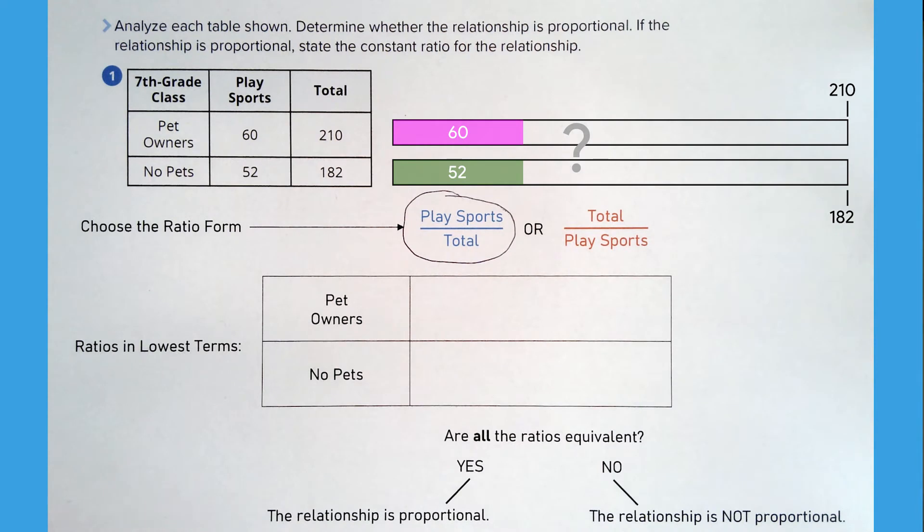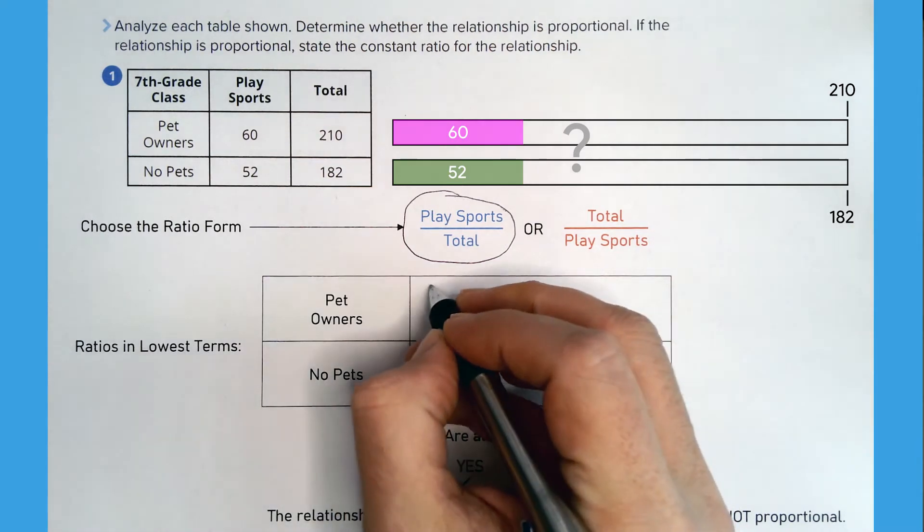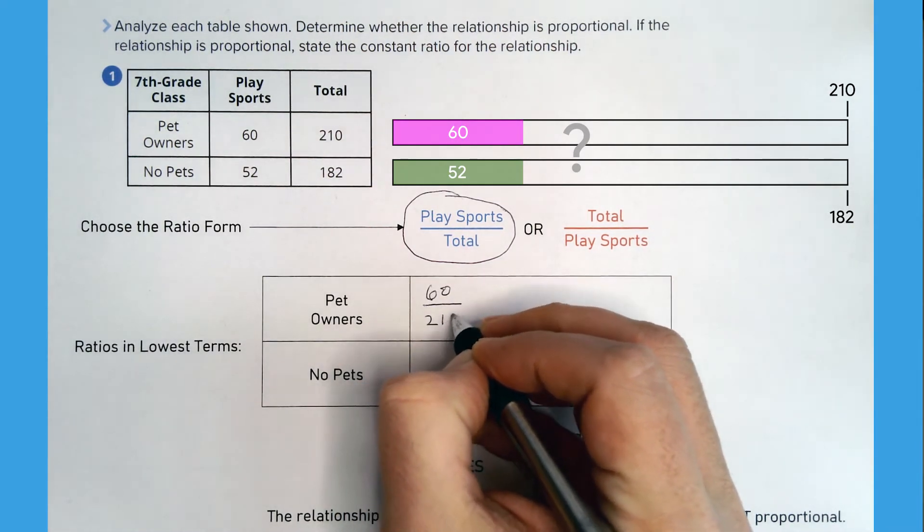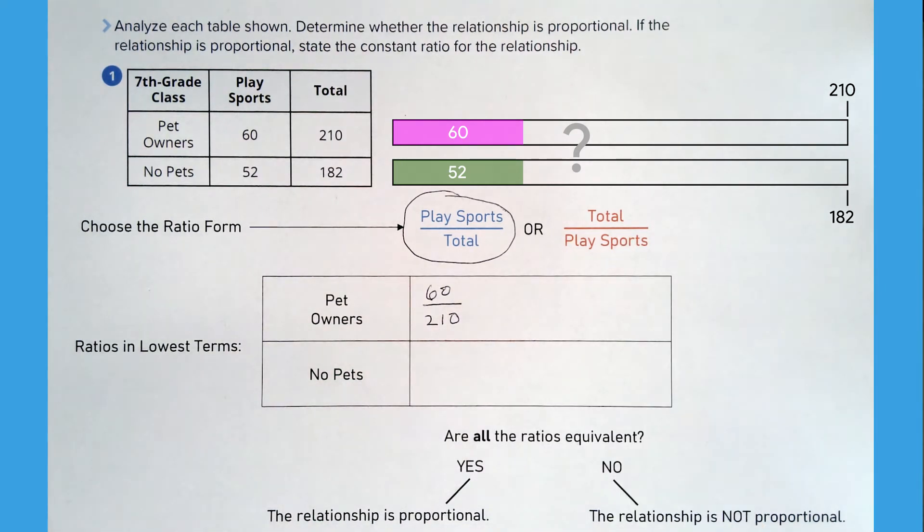Now write both ratios in the same form. For pet owners the ratio is 60 to 210. For non-pet owners the ratio is 52 to 182.